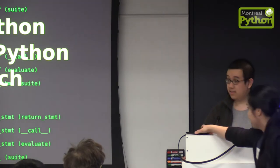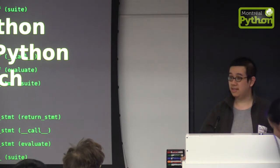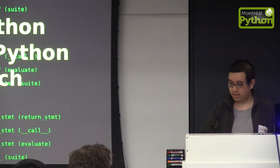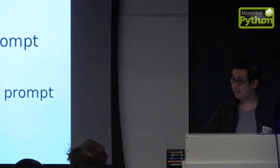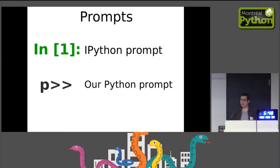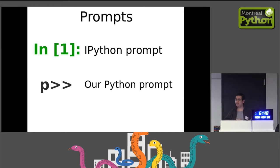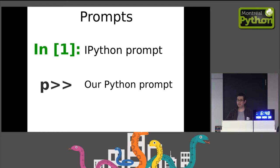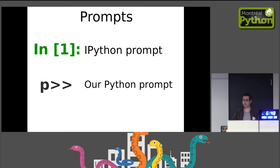I'll be talking about writing an interpreter in Python itself from scratch. Let's get rid of the hard question first: how to distinguish between the different prompts during the demo, because we have Python and we're writing Python in it. I'm going to use IPython for the regular Python interpreter — if you see a bracket-number-bracket, we're in the regular Python interpreter. If you see 'p>>' we are in our interpreter, the one we're trying to write.